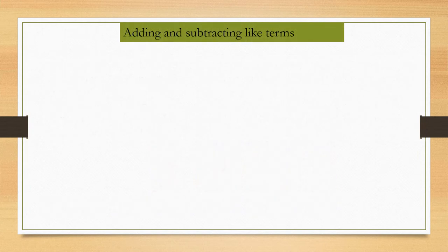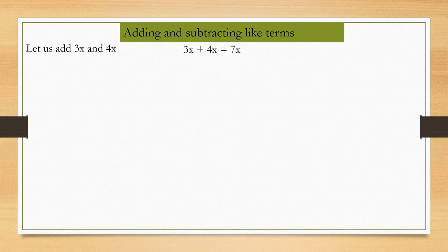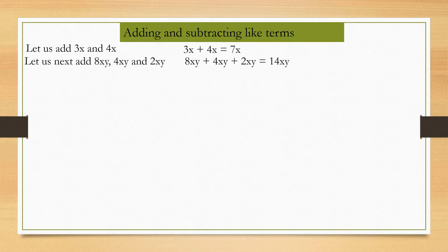Adding and subtracting like terms: the simplest expressions are monomials, which consist of only one term. Let us add 3x and 4x. We know x is a number, so 3x plus 4x equals 3 plus 4, that is 7x. Next, let us add 8xy, 4xy, and 2xy. These three are like terms, so 8xy plus 4xy plus 2xy equals 8 plus 4 plus 2, that is 14xy.